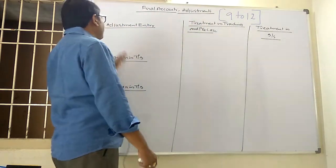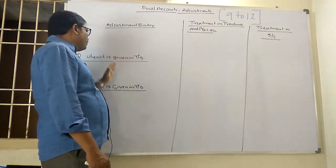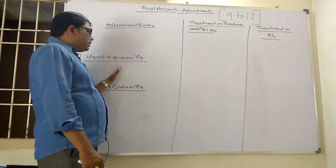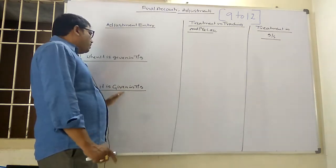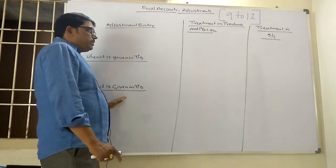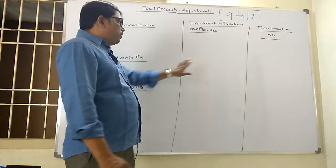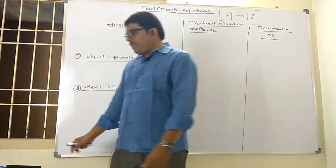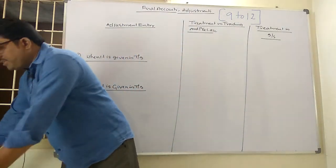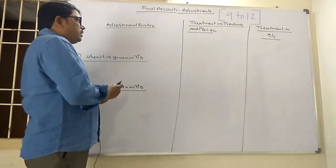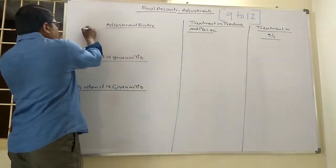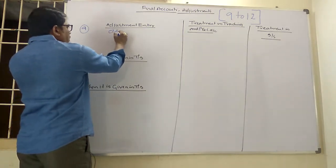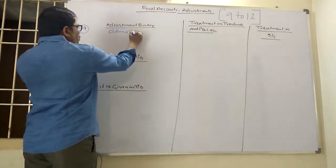For each adjustment I will write the adjustment entry, and explain the treatment when it is given as a part of adjustments versus when it is given as a part of trial balance, and the effect in trading account, profit and loss account, and balance sheet. The first important adjustment we are going to discuss — the ninth one — is closing stock.